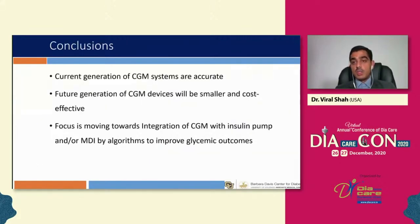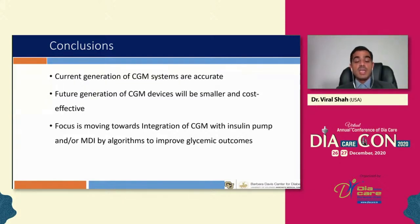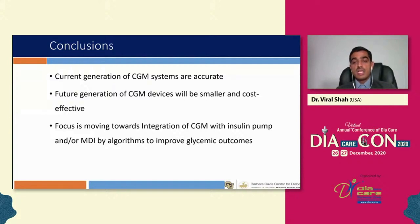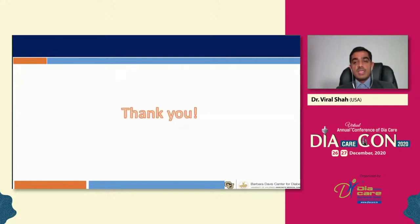In conclusion, current-generation CGM systems are very accurate. The future looks even brighter — the focus is moving toward smart, small, integrated systems with pumps and smart pens to make life easier for people with type 1 and type 2 diabetes and improve their glycemic control. Dr. Shah thanked everyone for listening and invited questions.